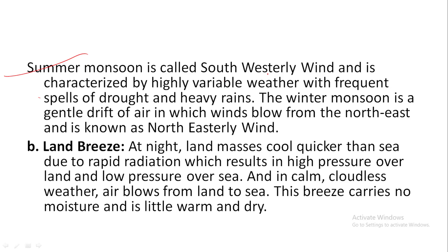The summer monsoon is called the southwestern westerly winds and is characterized by highly variable weather with frequent spells of drought and heavy rains. The winter monsoon is a gentle drift of air in which the winds blow from the northeast and is known as northeasterly winds.